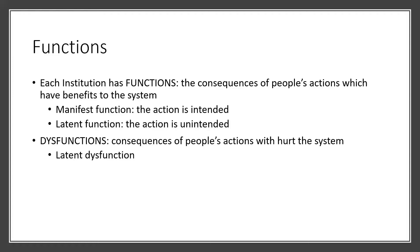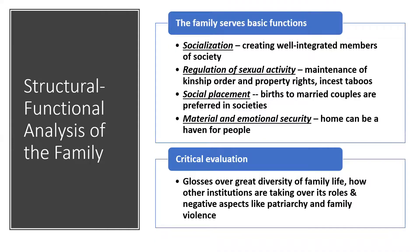Functions and dysfunctions — dysfunctions are consequences of people's actions which hurt the system. A lot of dysfunctions involve deviance, like driving down the wrong side of the road. If you drive down the wrong side of the road, you have the potential to kill people, and when you kill people, it hurts the system. With institutions, we look mostly at the functions — manifest and latent. What did we build it to do? What else does it happen to do? That leads us to a structural-functional analysis of the family.